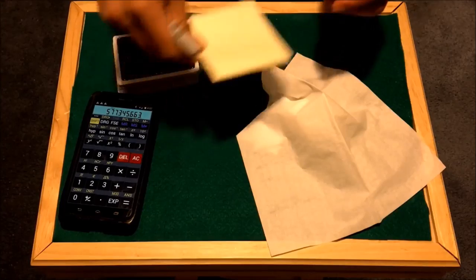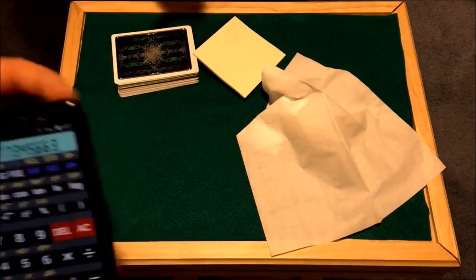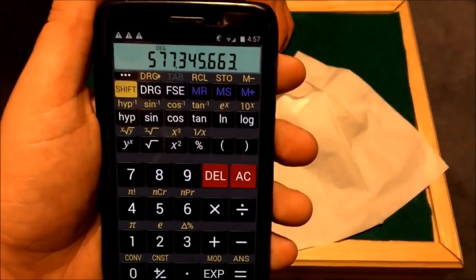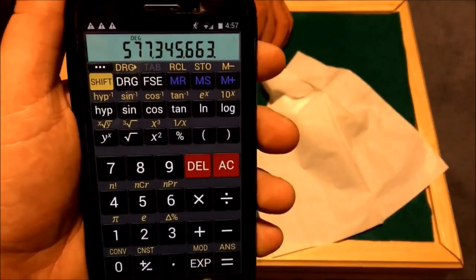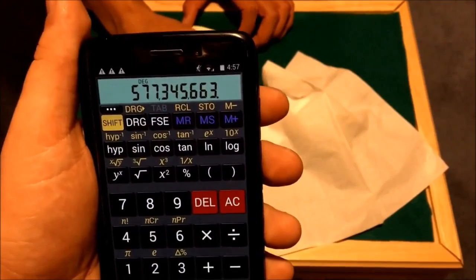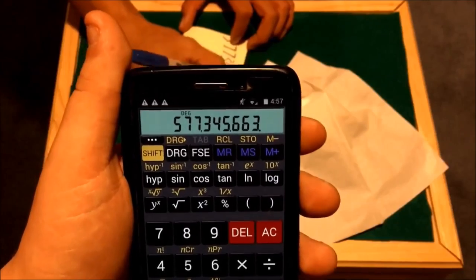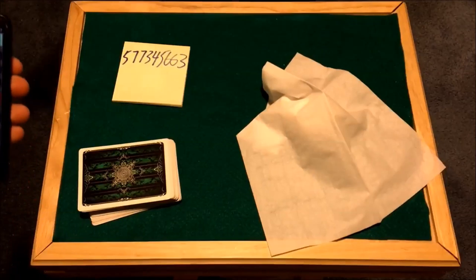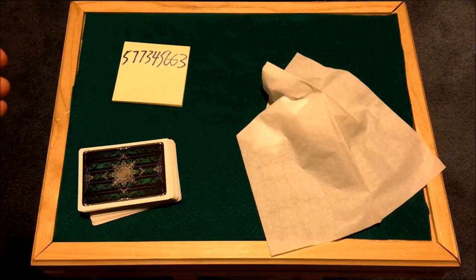And you can see we get a pretty big number, and I'm actually going to write this number down. Robert, can you hand me that post pad, please? Oh yeah, I got you. All right, here we go. I'm going to write the number down. So Robert, if you could read the number out loud, please. Five. Five. Seven. Seven. Seven. Seven. Three. Three. Four. Four. Five. Five. Six. Six. Six. Six. Three. Three.